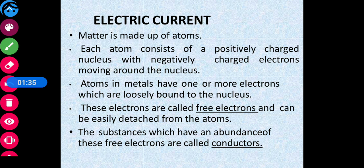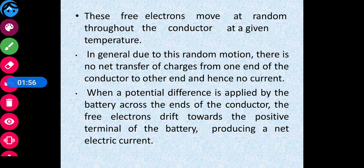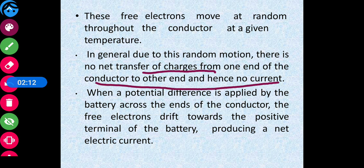Matter is made up of atoms. Each atom consists of a positively charged nucleus with negatively charged electrons moving around it. Conductors are substances which have free electrons in abundance. These free electrons are loosely bound to the nucleus and free to move inside the material. They move randomly in all directions, and due to this random motion there is no net transfer of charge.